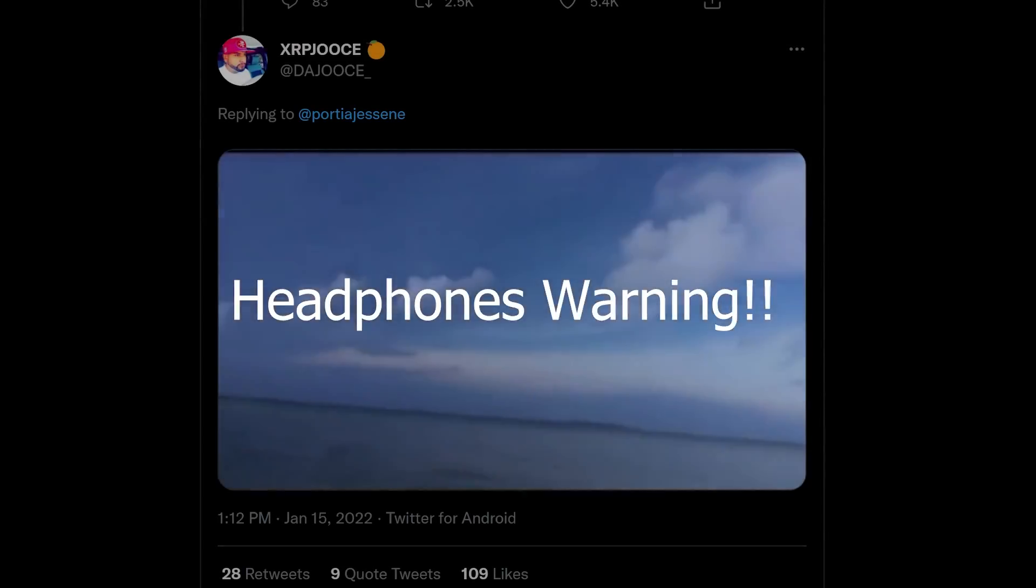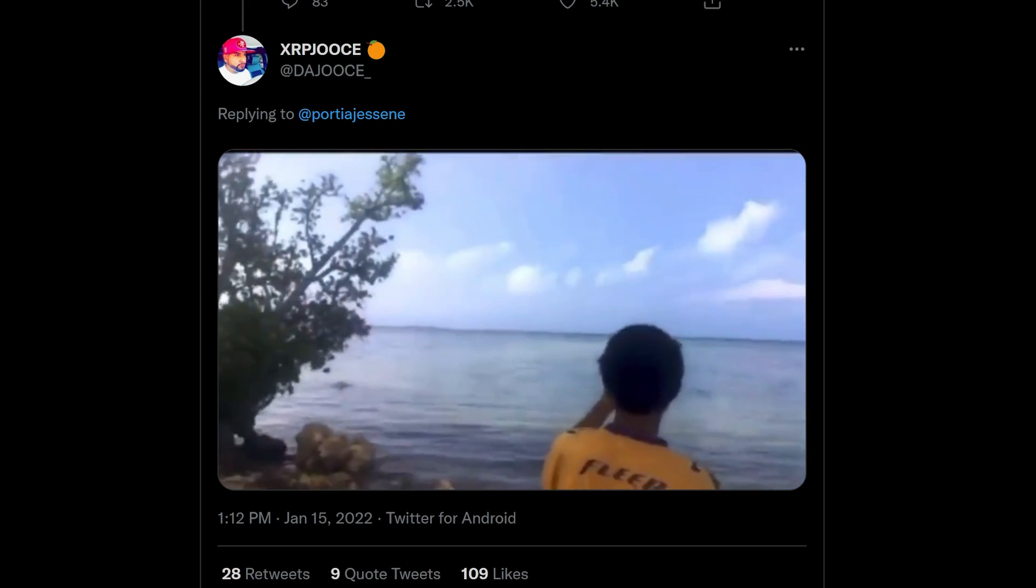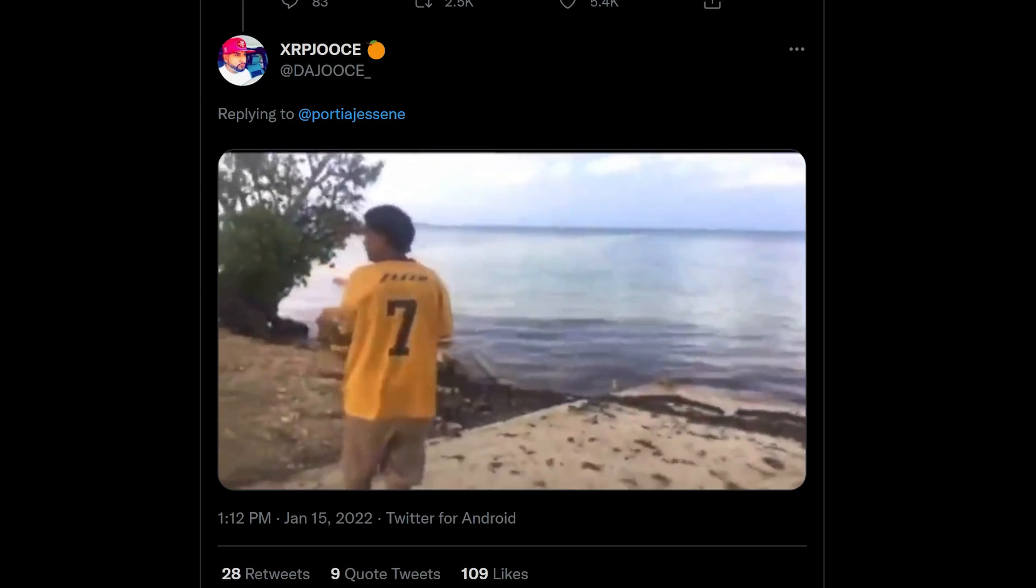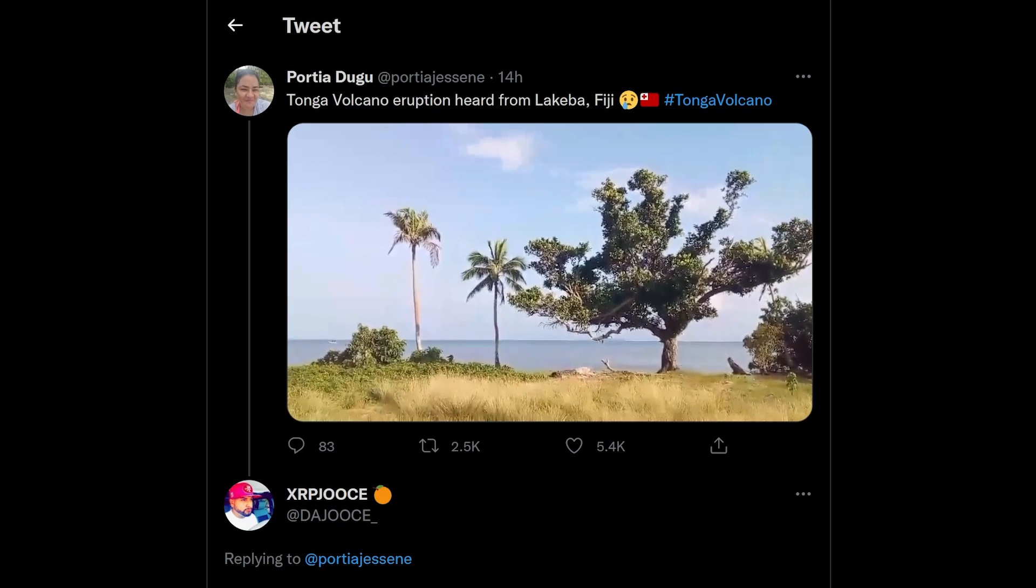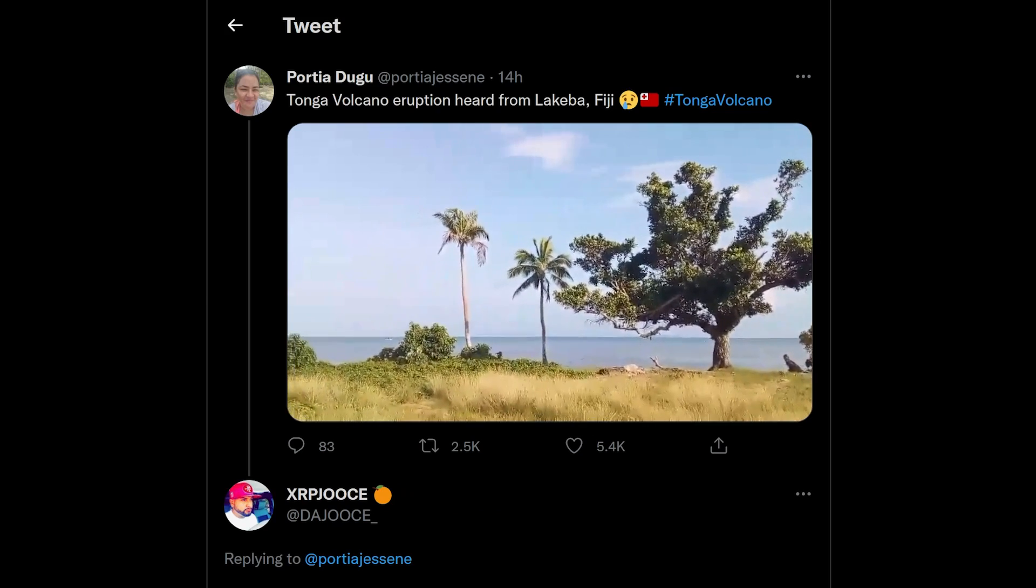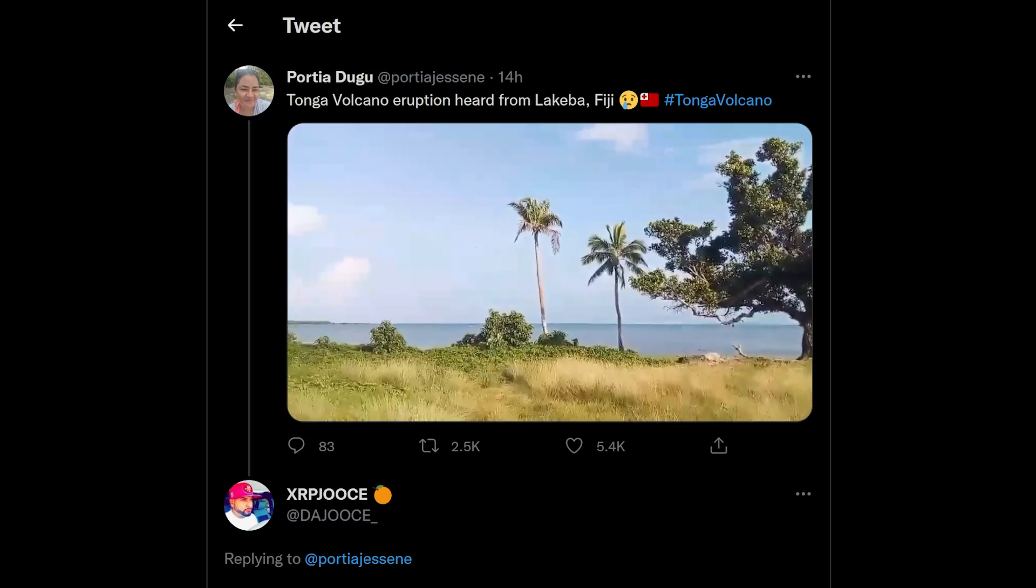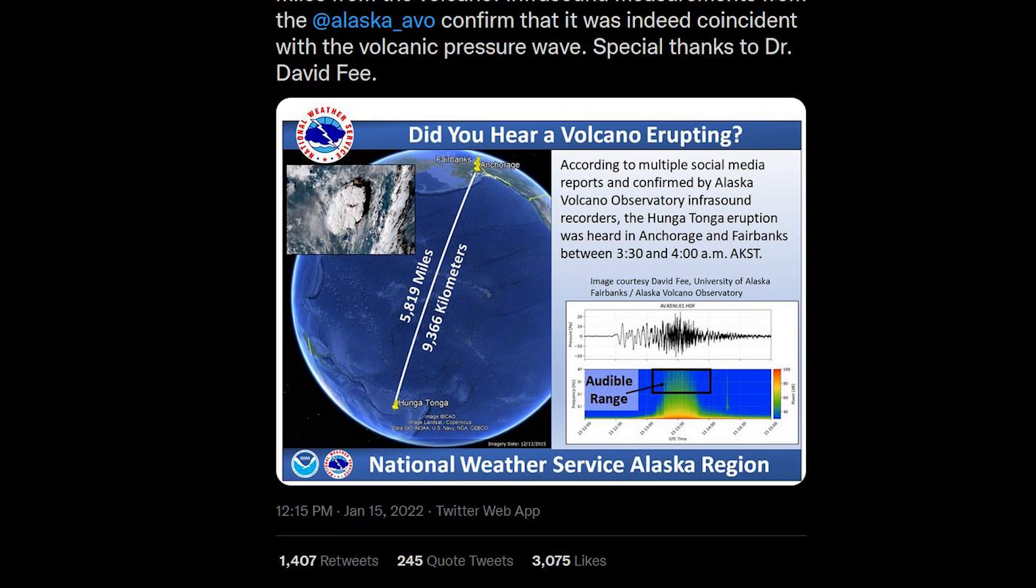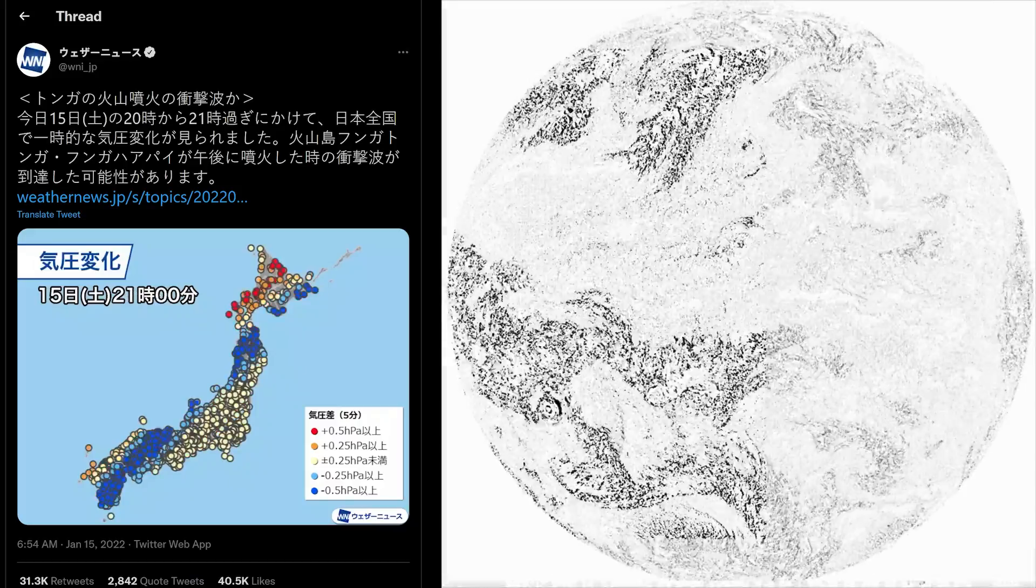At first, the pressure wave produced a boom almost deafening to people a few miles away. But the sound was reduced to just infrasound and pressure as it moved roughly at the speed of sound, as you would expect, from the blast site all the way to Africa.